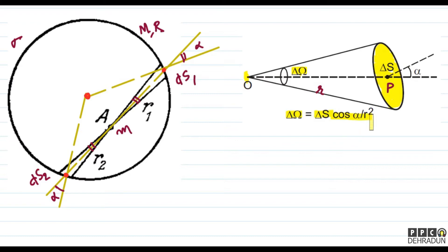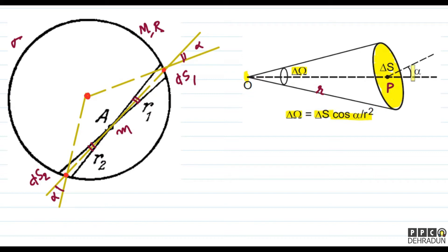The solid angle formula is: dΩ = cos α / R², where R is the distance between point O and the area element, and α is the angle between the perpendicular to the area and the line OP. Here O is the point, P is the central point of the small area element, and α is the angle between these two lines.